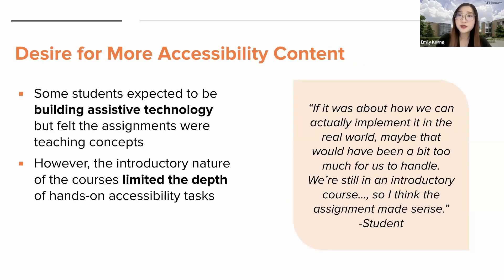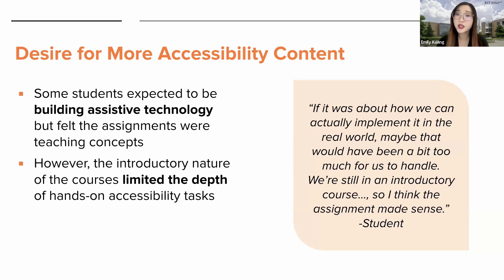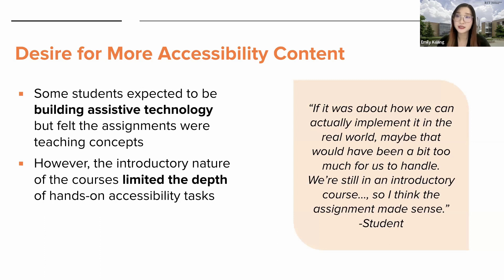Several students noted a disconnect between their expectations of the assignment versus its actual goals, because they wanted to be building assistive technology but found the assignments leaned towards teaching accessibility concepts. This discrepancy was partly attributed to the fact that these courses were introductory in nature, which limited the depth of hands-on accessibility tasks that could be included. This limitation was also recognized by students, with one noting that if it were about how they can actually implement it in the real world, that might have been too much to handle, and that the assignments made sense given the introductory context.